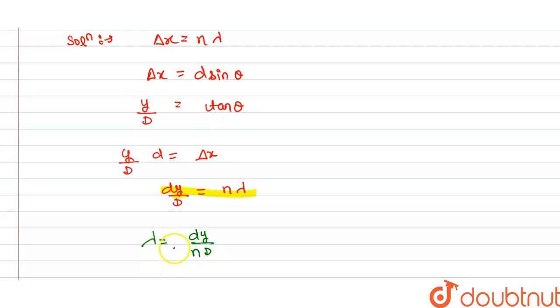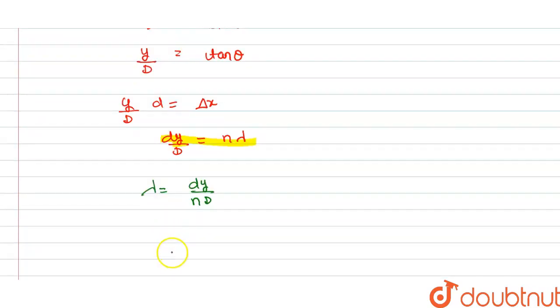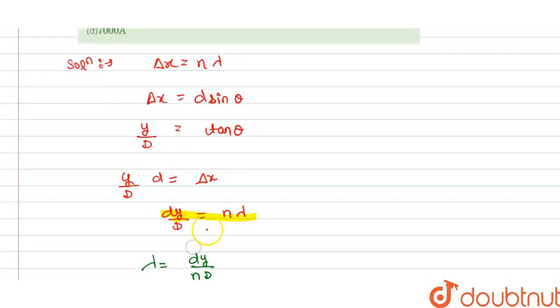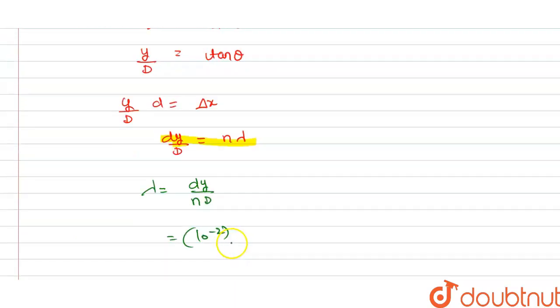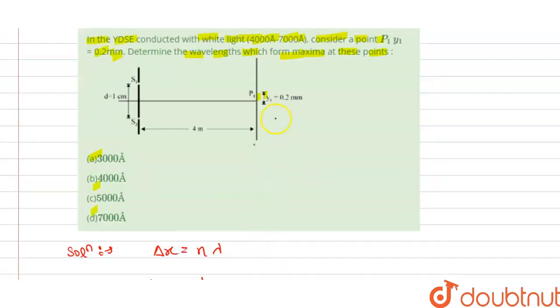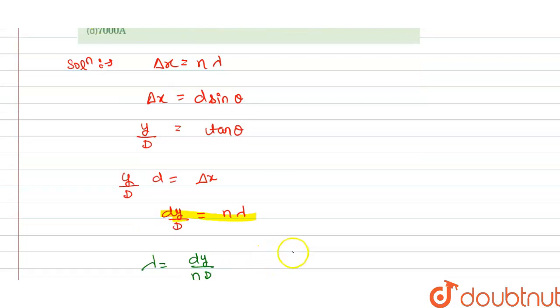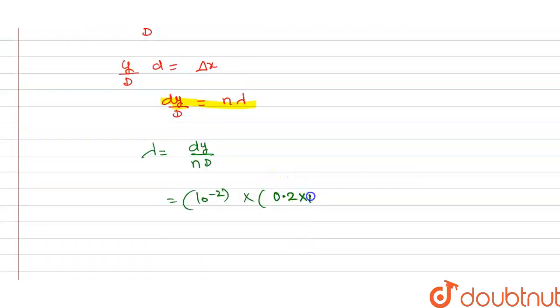So from this we get: d is 10⁻² (it is given as 1 centimeter, so we convert it to meter, this is 10⁻² meter), and this is in multiplication with y. y is 0.2 mm (given to us), so this is 0.2 × 10⁻³, and this is divided by 4 mm.